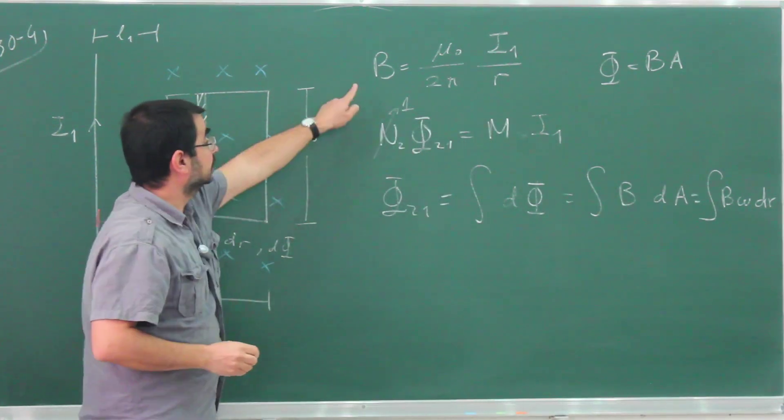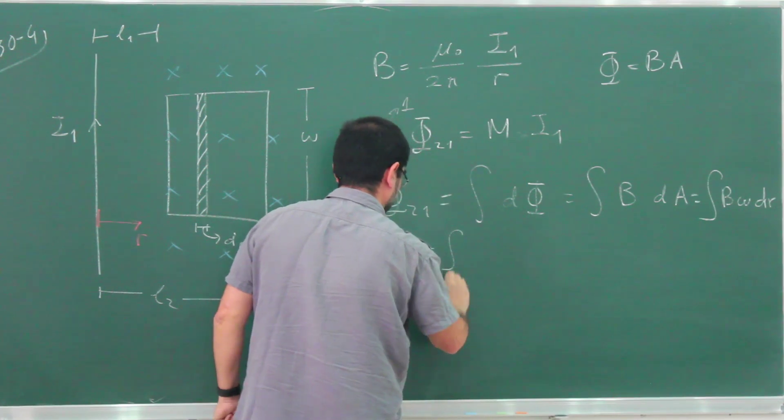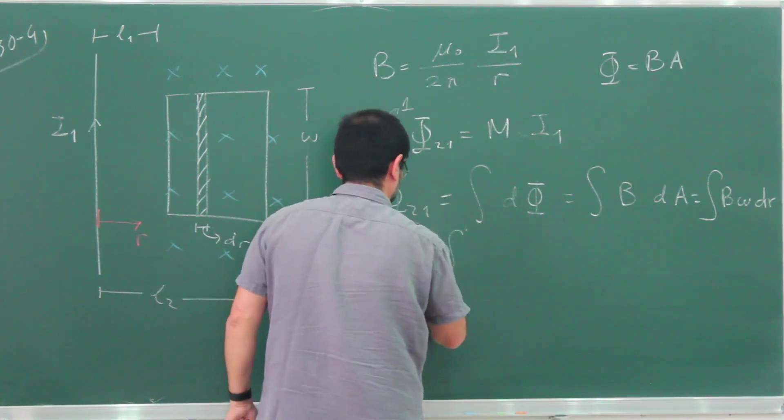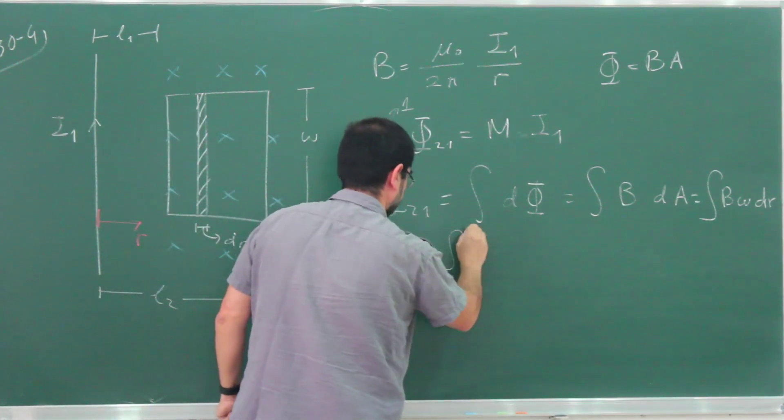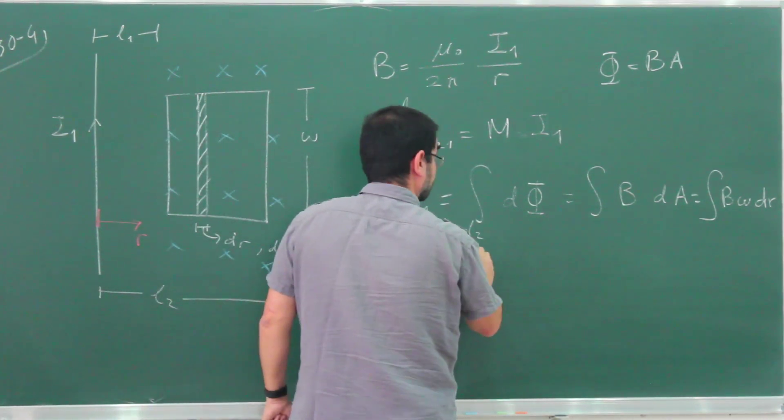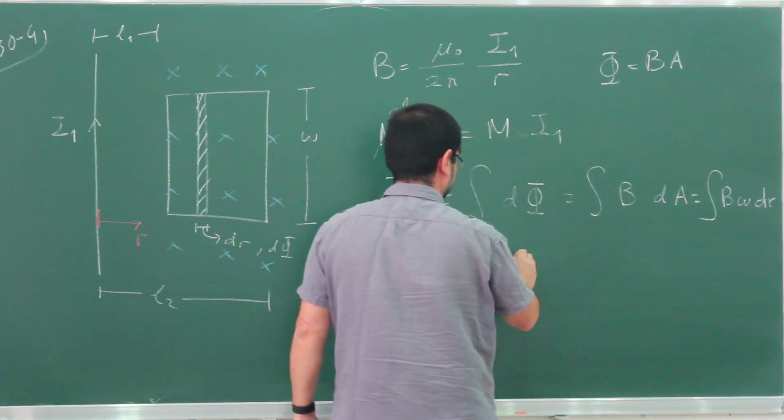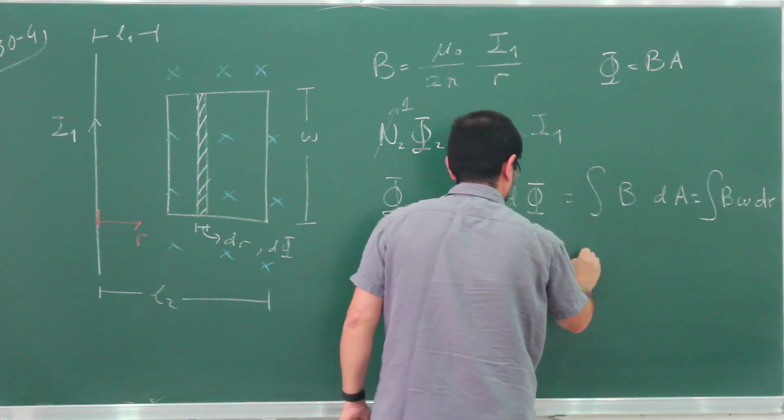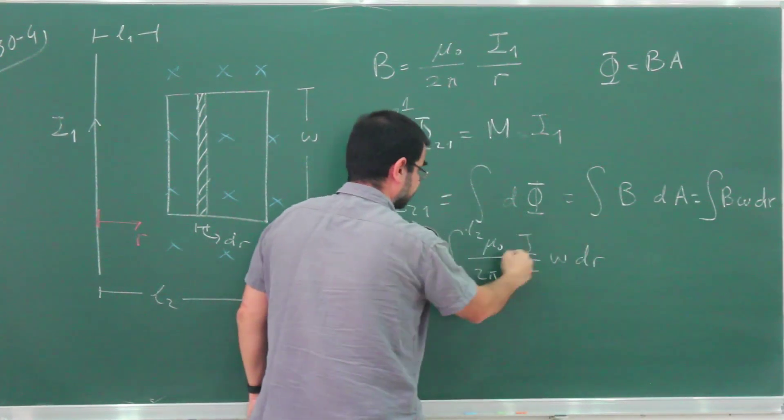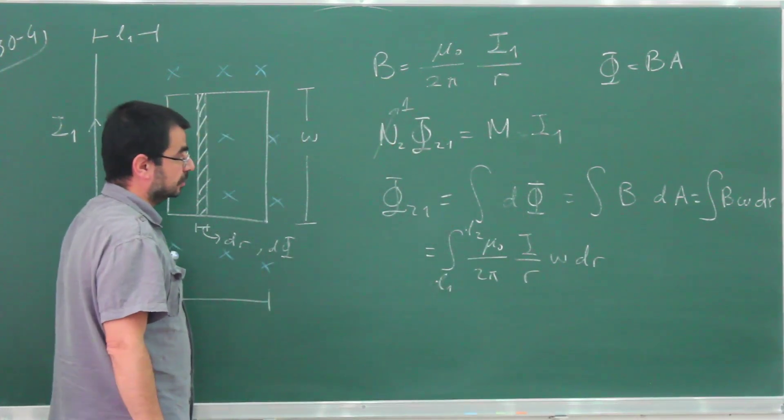And B is of course given by this formula, so I can now write this. This integral goes from L1 to L2: μ₀ over 2π times i1 over r times W dr. All of these except 1/r are constants, and this gives a simple logarithmic integral.